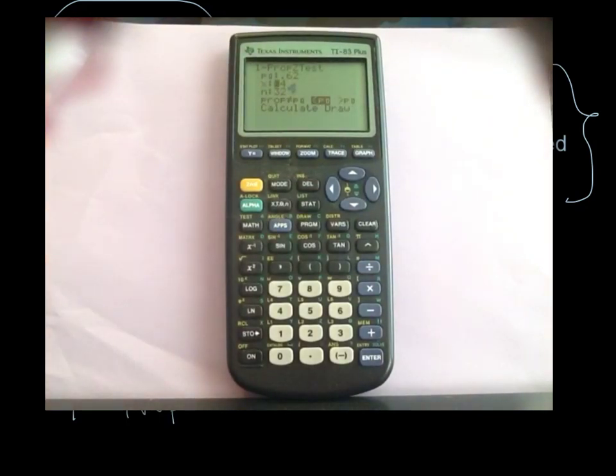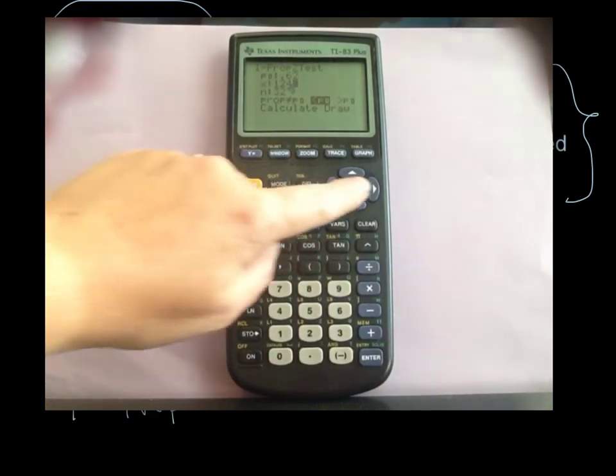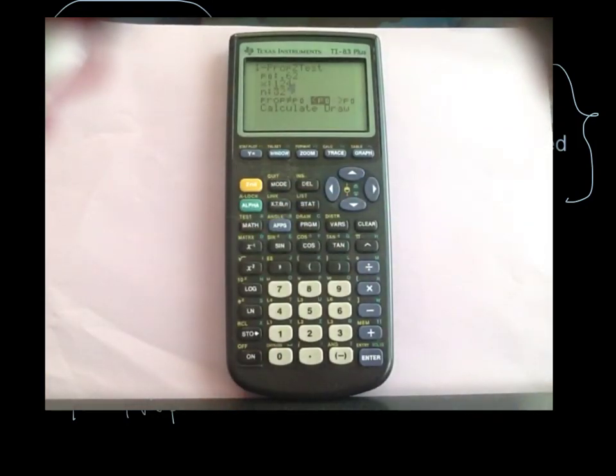X is how many people admitted, in this case admitted to cheating, or how many people said they did whatever it is you're looking for. So 124 out of our survey said that they admitted to it.